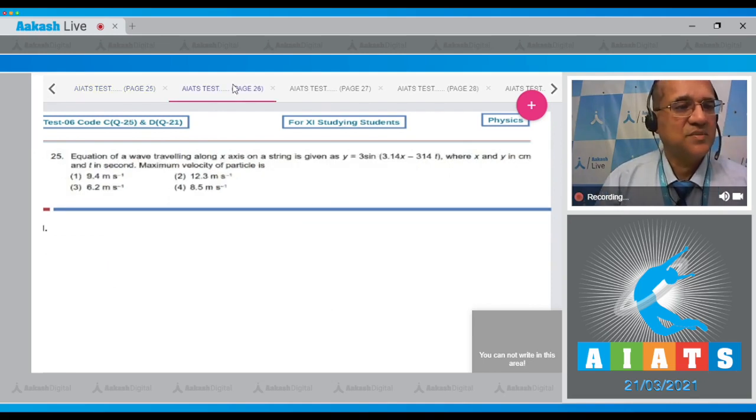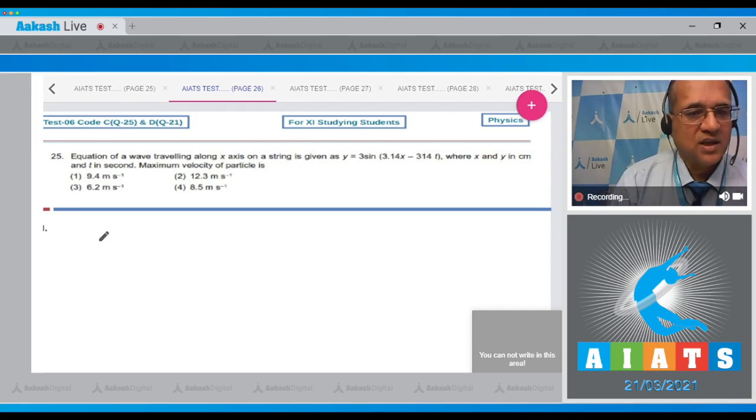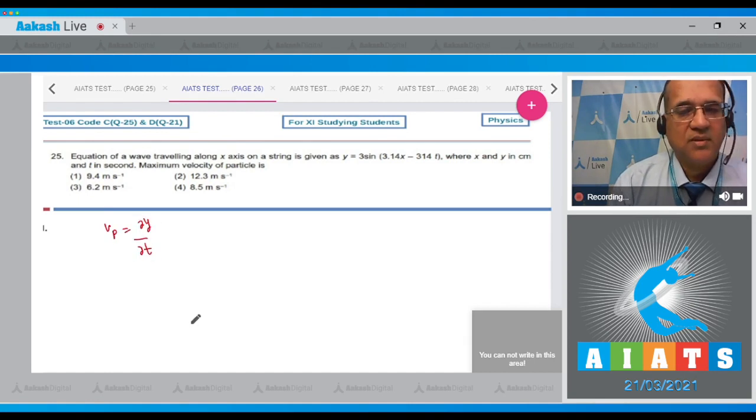Question number 25 says that equation of a wave traveling along x-axis on the string is given by y equals 3 sine of (3.14 x minus 314 t), where x and y are in centimeters and t in seconds. The maximum velocity of the particle - see, if y is given, then velocity of the particle is equal to the derivative of y with respect to time. So sine changes to cos, and when you take the maximum velocity, that is equal to omega into a.